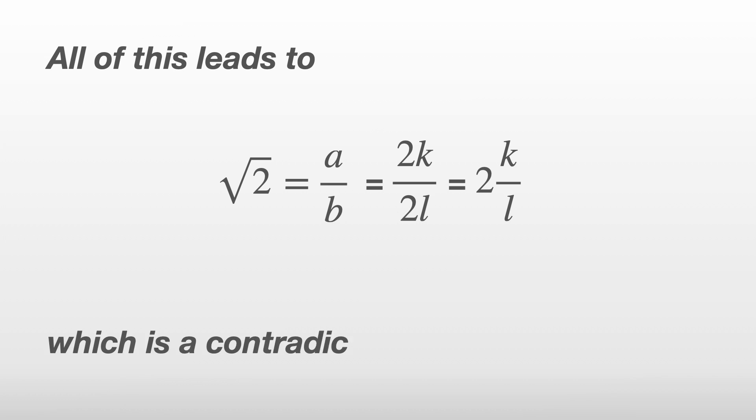Okay, so we start with a over b in its simplest form, but the algebra has showed us that they actually both had the common factor of 2. This is a contradiction, and it implies something was wrong with our assumptions to begin with.